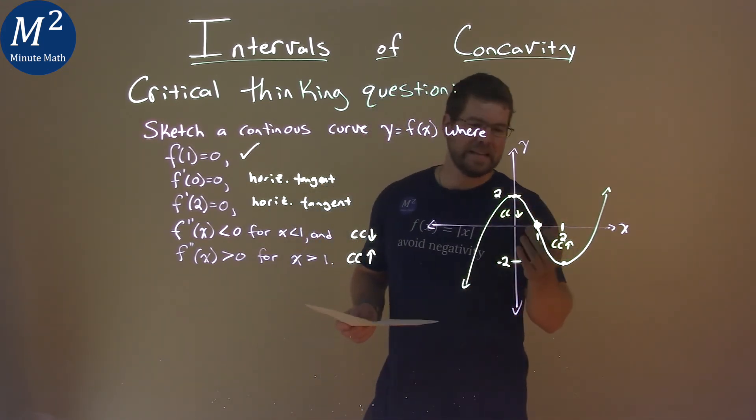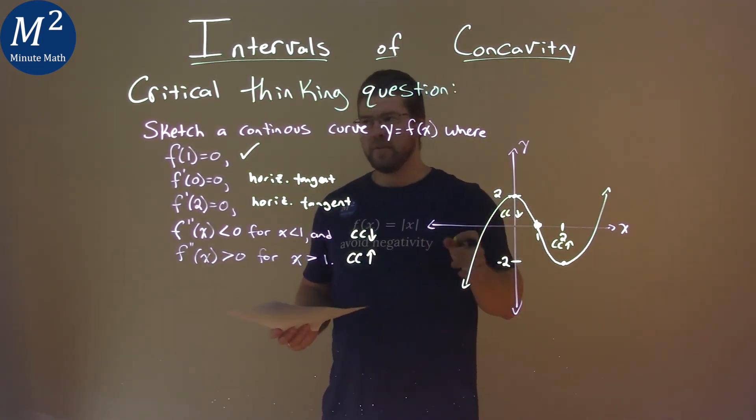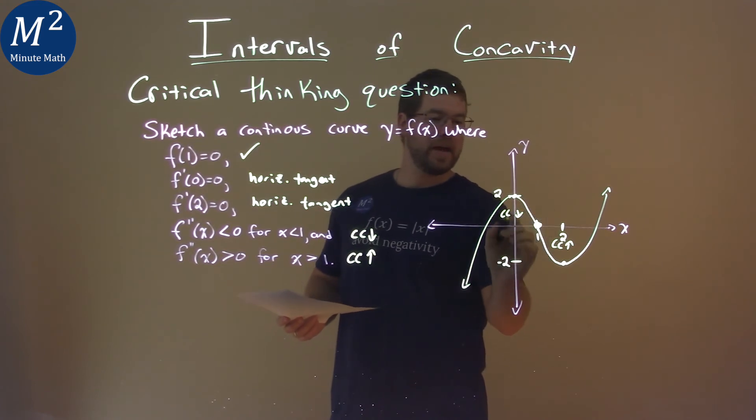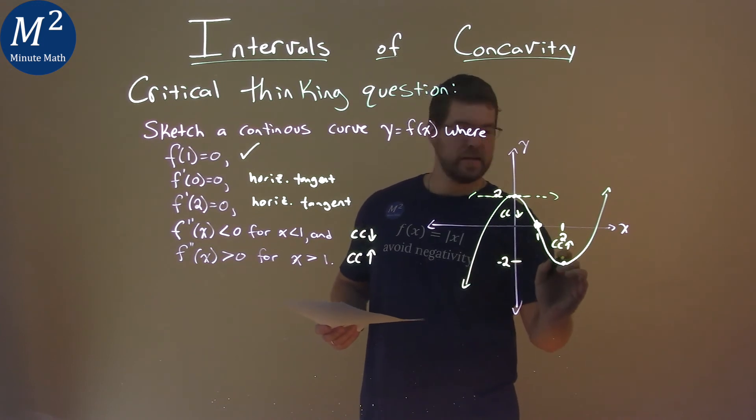It's kind of happening. I don't really need that specifically called point of inflection. Maybe not for my graph specifically, but f of 1 equals 0. We're good. We have a horizontal tangent here at x equals 0, right? Horizontal tangent, and as well as at 2.